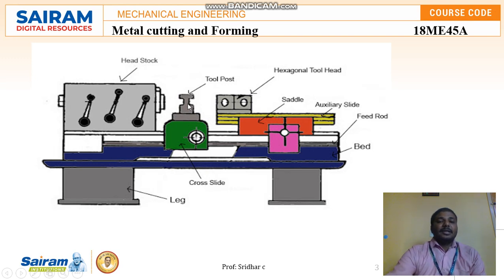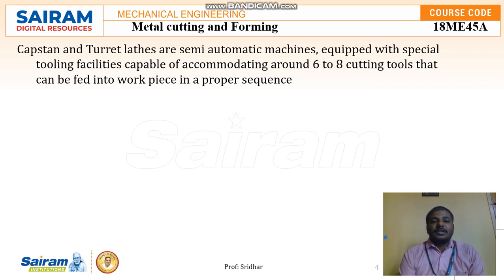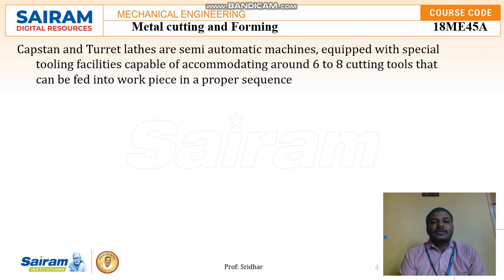Both capstan and turret lathes have similar functions with only small differences. They are both semi-automatic machines equipped with special tooling facilities, capable of accommodating around 6 to 8 cutting tools that can feed into a workpiece in a proper sequence. They are suitable for very long machining processes and can provide a good surface finish. This is one of the major reasons we still use capstan and turret lathes.